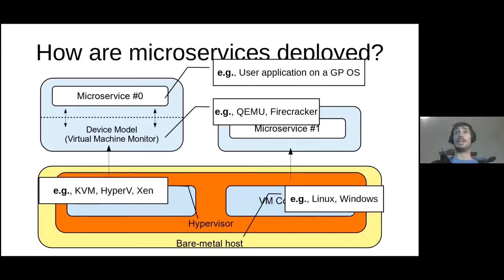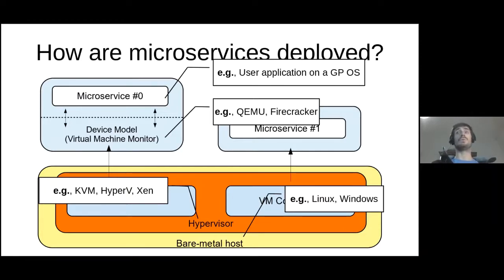Let's see how the actual deployment of a microservice looks by following this pattern. I'm going to describe the picture from bottom to top. We have a bare metal host which contains an operating system and the hypervisor. In the context of each virtual machine, we have the device model, which is created by the virtual machine monitor, which could be QEMU or Firecracker. The microservice runs as a user application on top of a general-purpose OS.